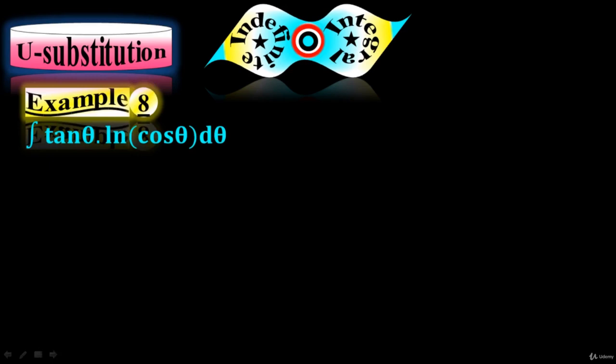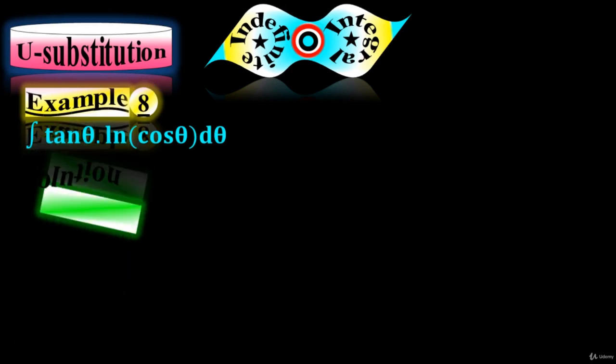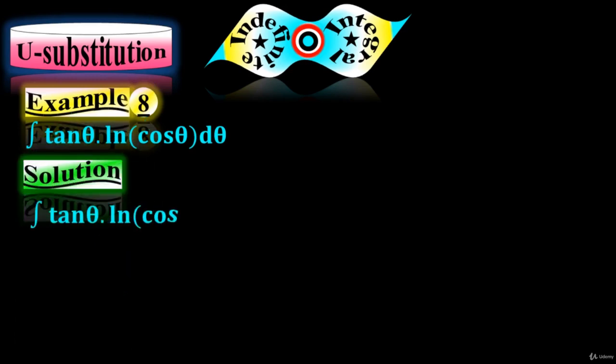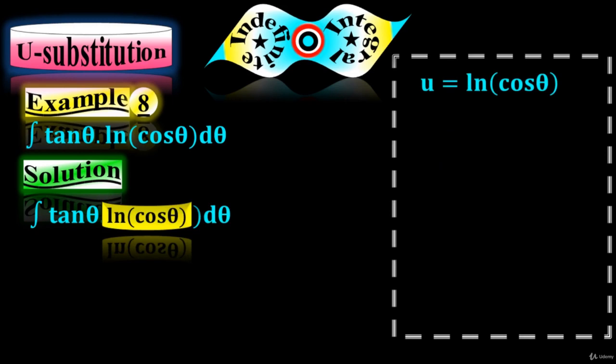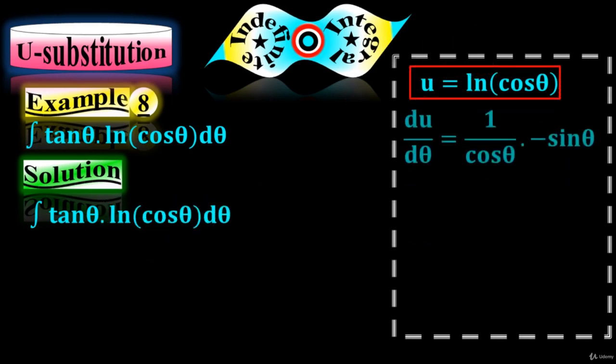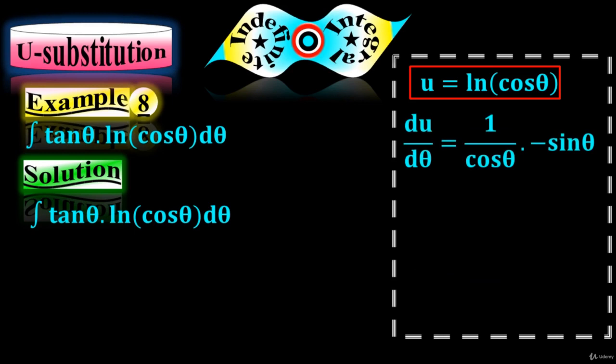Example number 8. Find the integral of tan(θ) times ln(cos(θ)) dθ. Let's suppose ln(cos(θ)) equals u. Take the derivative on both sides.